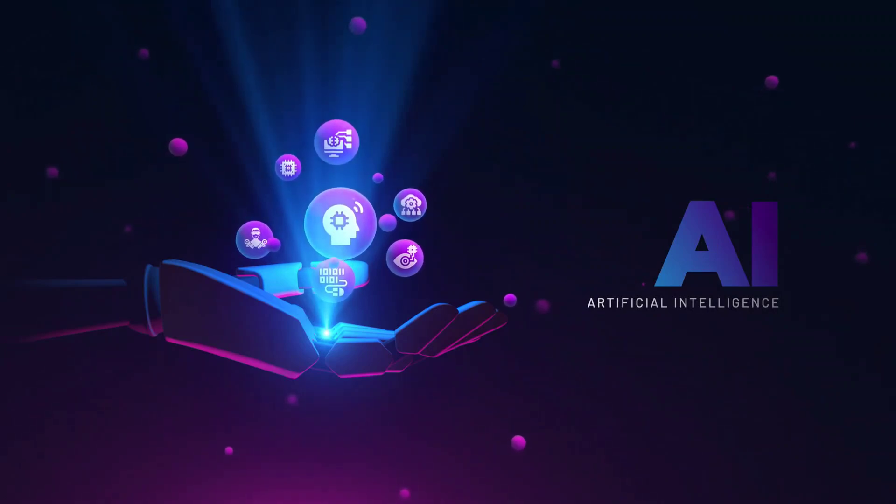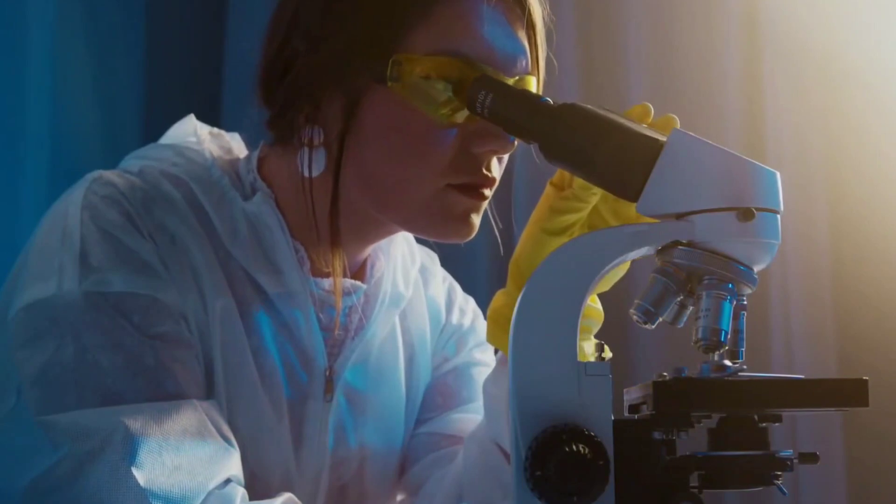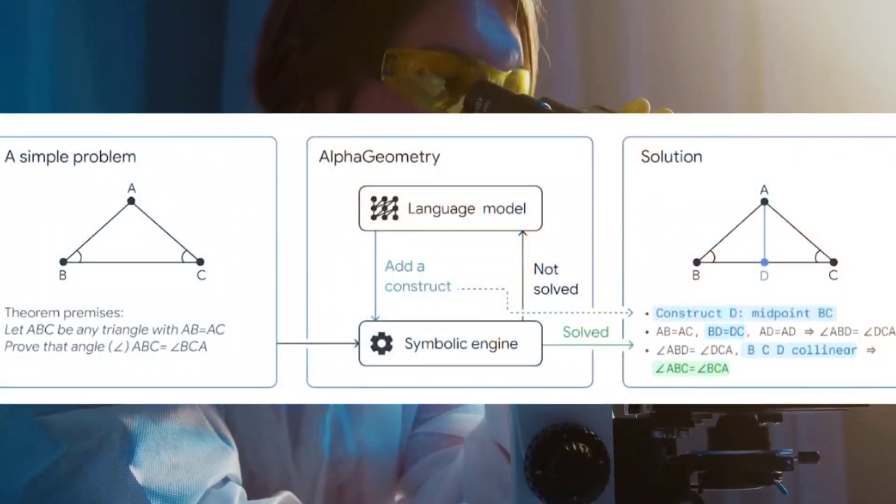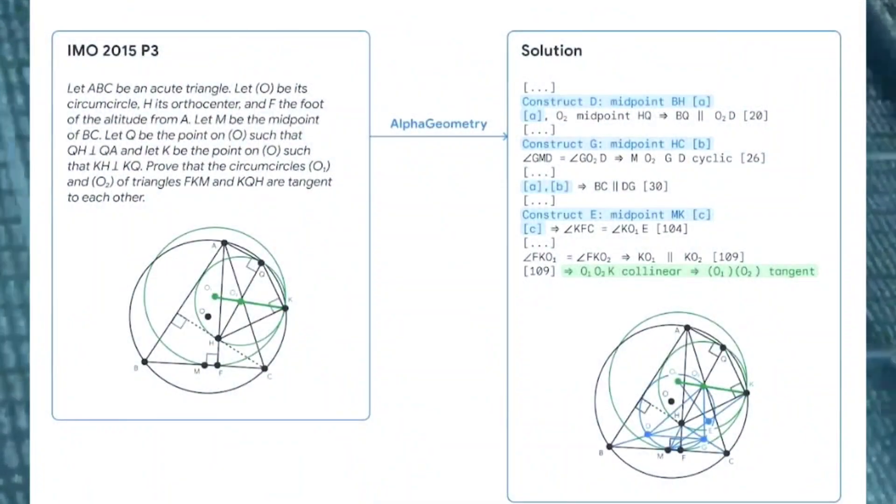To comprehend Alpha Geometry's prowess, let's peek into its brain, a neurosymbolic architecture that marries the best of two worlds. Imagine it like a superhero duo, the neural language model and the symbolic deduction engine, working hand-in-hand to crack the code of complex geometry problems.